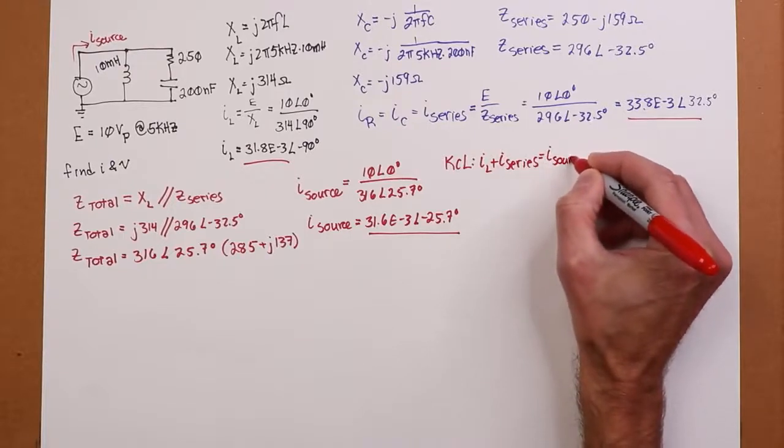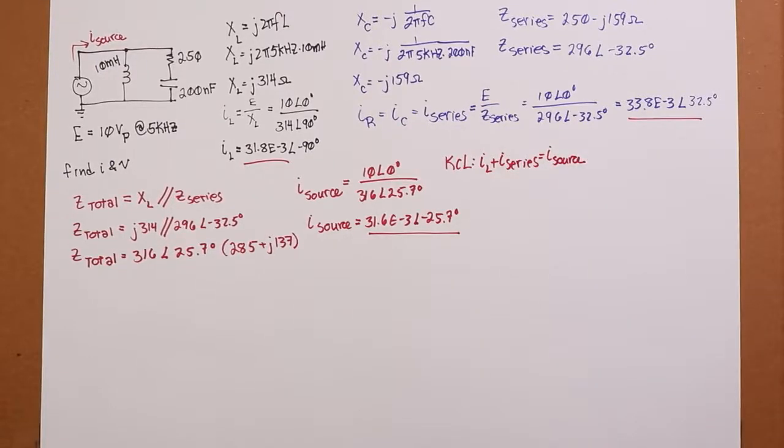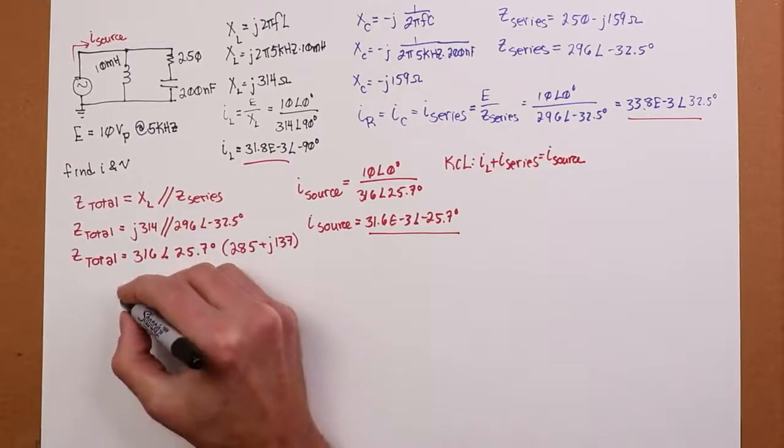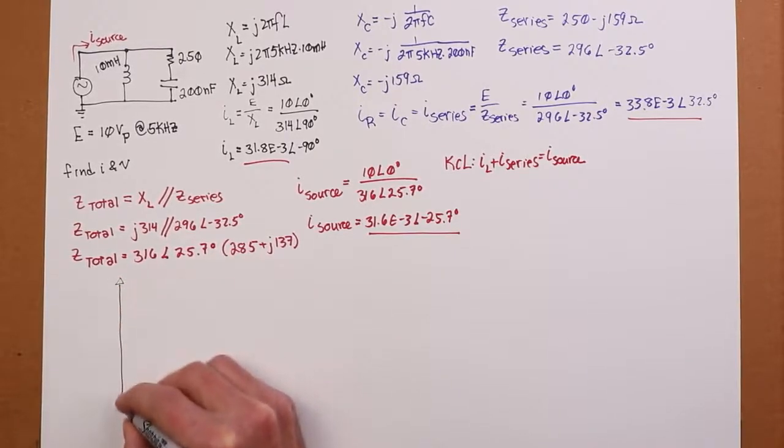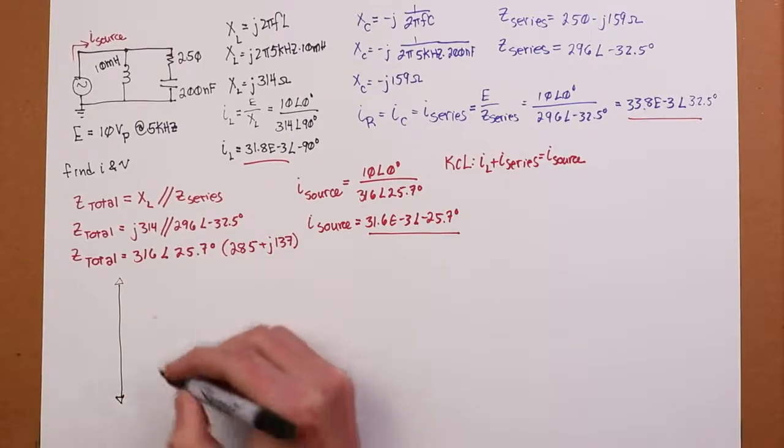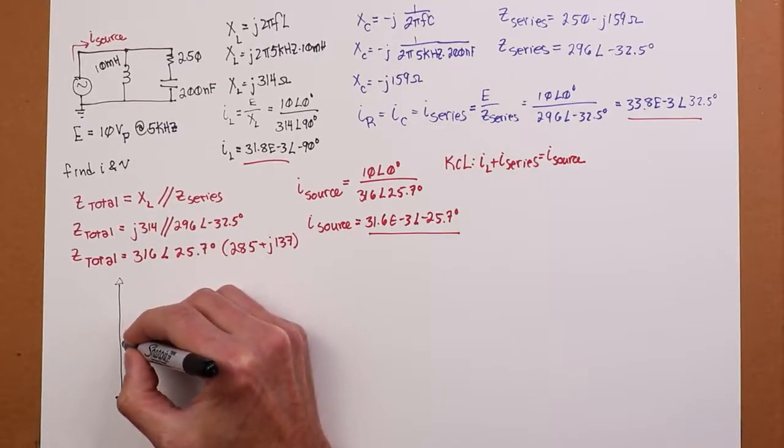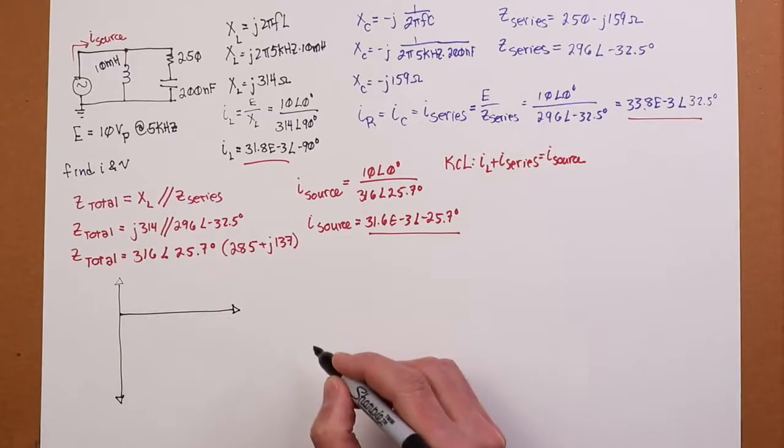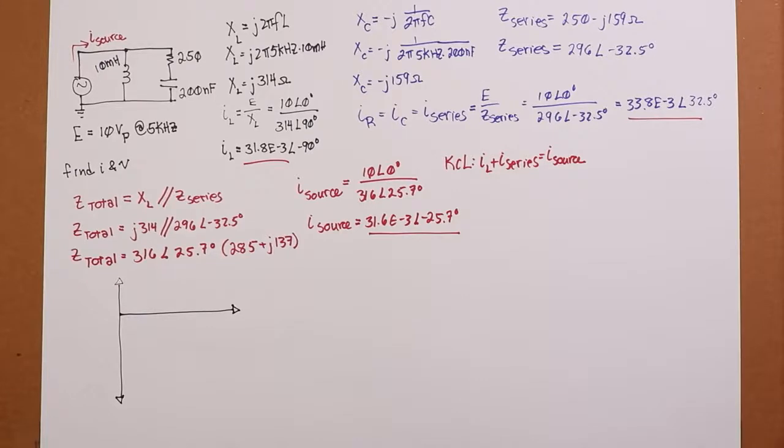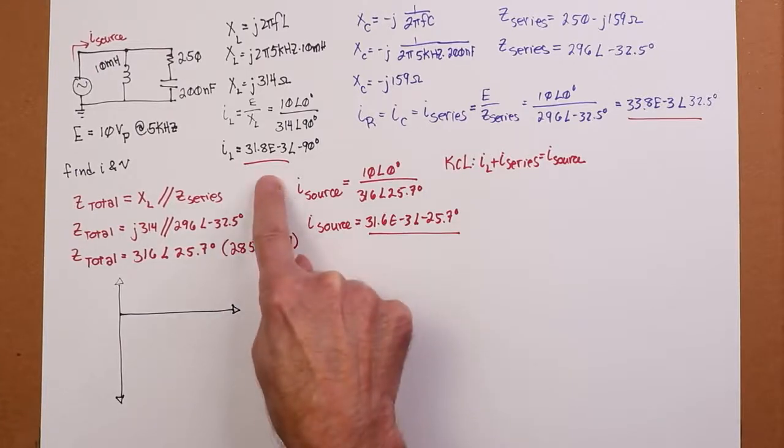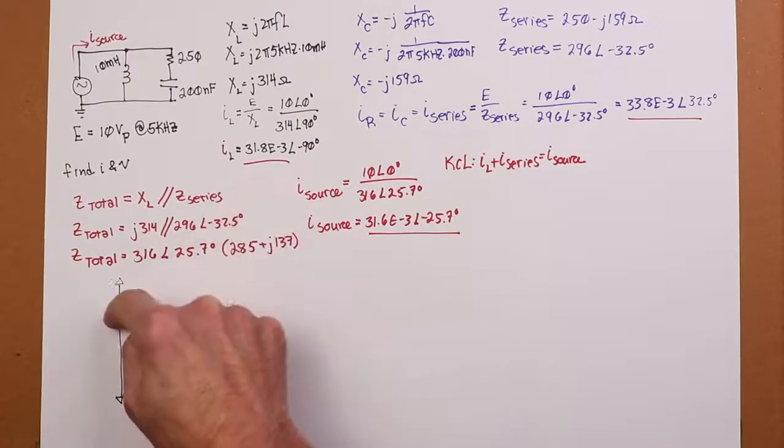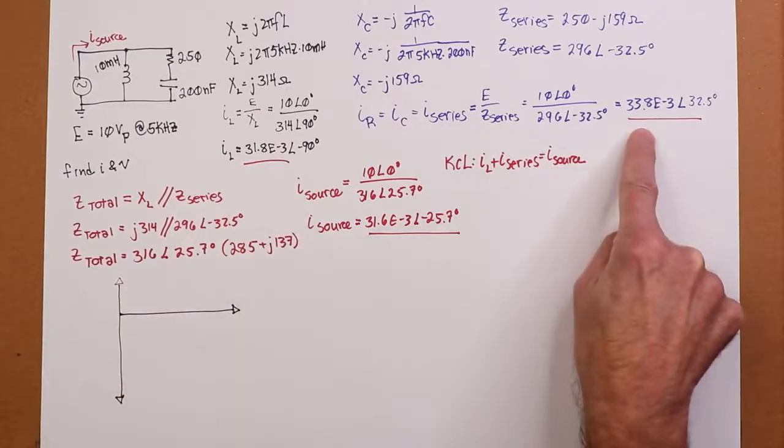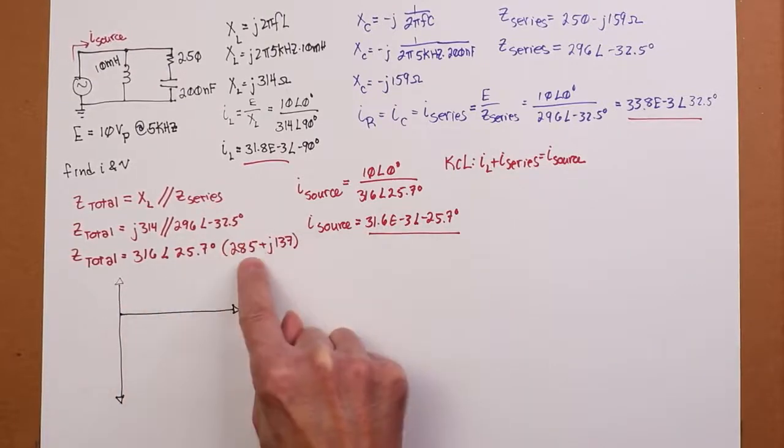And you could, knowing the frequency, you could go back and figure out what J137 turns out to be. It turns out to be just about 4.4, it's actually 4.36 mH. So at this particular frequency, this three-element series parallel network is basically equivalent to a 285 ohm resistor that's in series with a 4.36 mH coil. You change the frequency and that alters, because as you change the frequency, these values both change.